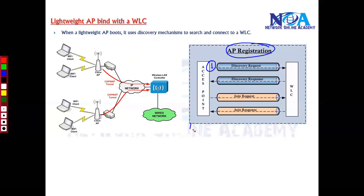The Discovery Request is initiated by the access point. The access point starts the discovery process by sending out discovery request messages to the WLC, essentially trying to discover and locate the WLC on the network.